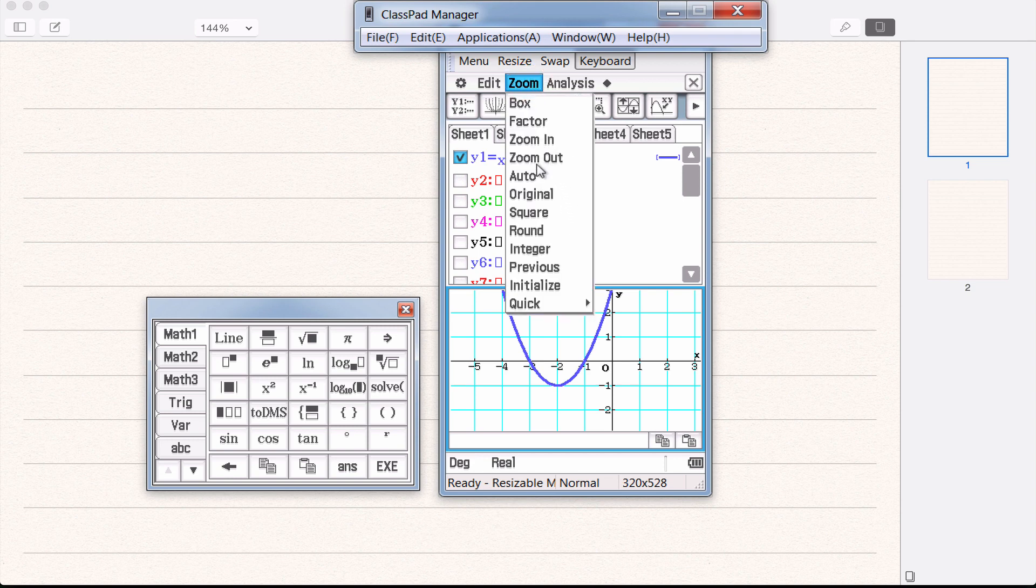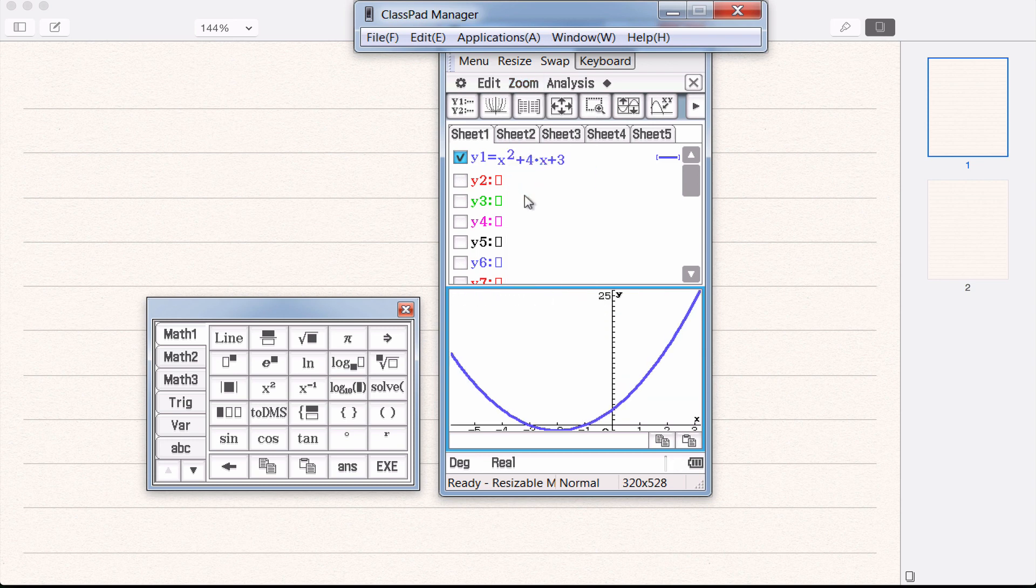Zoom in and zoom out. I'm pretty sure you'd be okay with those. Zoom auto will try and find, the calculator tries to work out where it thinks the function fits and it will try and make it fit the window perfectly. You can see it's kind of done an okay job but not perfect.